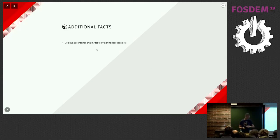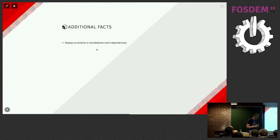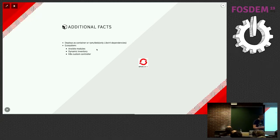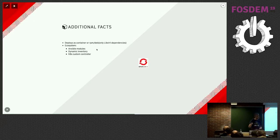You can deploy it as a container with Docker or Podman, or use an existing package — either RPM or Deb — where we only bundle libvirt dependencies to keep packages small. There's an ecosystem around kcli because it's also a Python library, so you can use Ansible modules through kcli. There's a dynamic inventory that leverages kcli, and even a Kubernetes custom controller to declare VMs. The benefit is a single tool — the same dynamic inventory and the same Ansible module regardless of whether you're using oVirt, libvirt, OpenStack, GCP, or AWS.